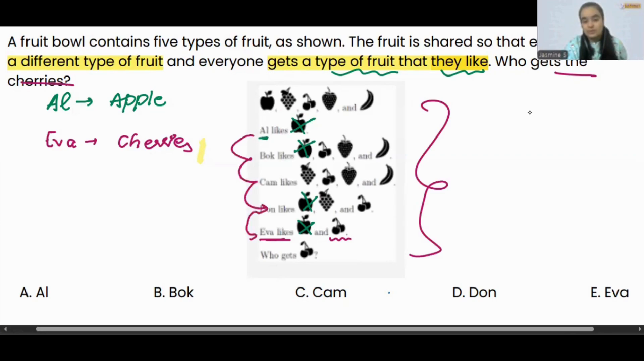It can look confusing if you go step by step to check all the people. So always start from the least count. Al is having apple, remove apple from all the other people, and then we can easily see that Eva is going to like cherry. No other option.